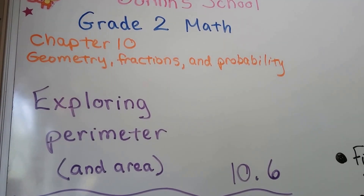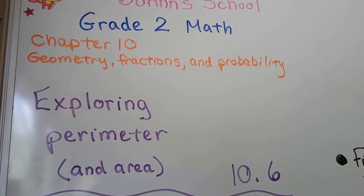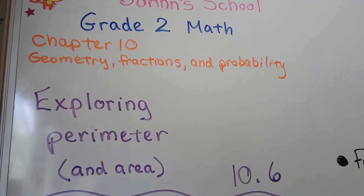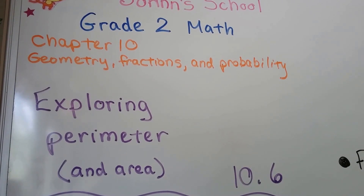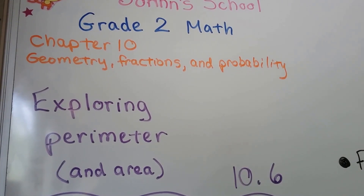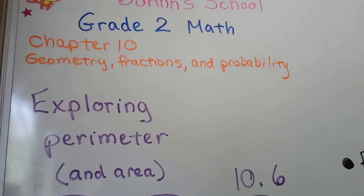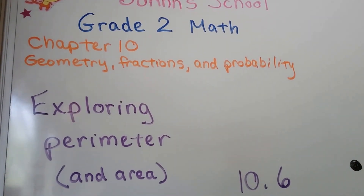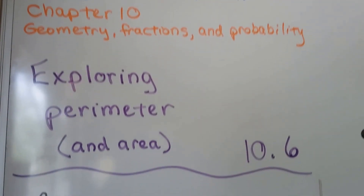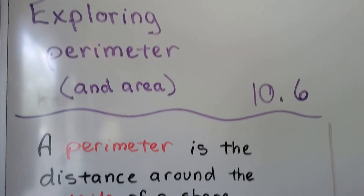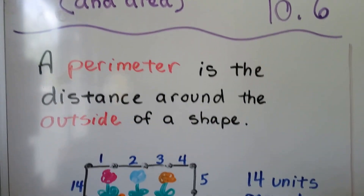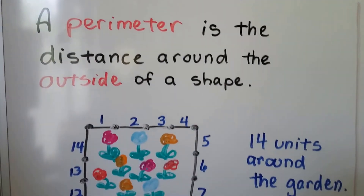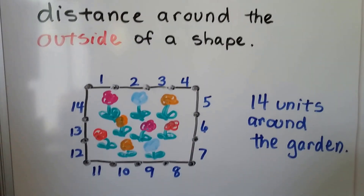We're going to talk all about perimeter in this lesson, and we'll discuss a little bit of area, too. A perimeter is the distance around the outside of a shape.